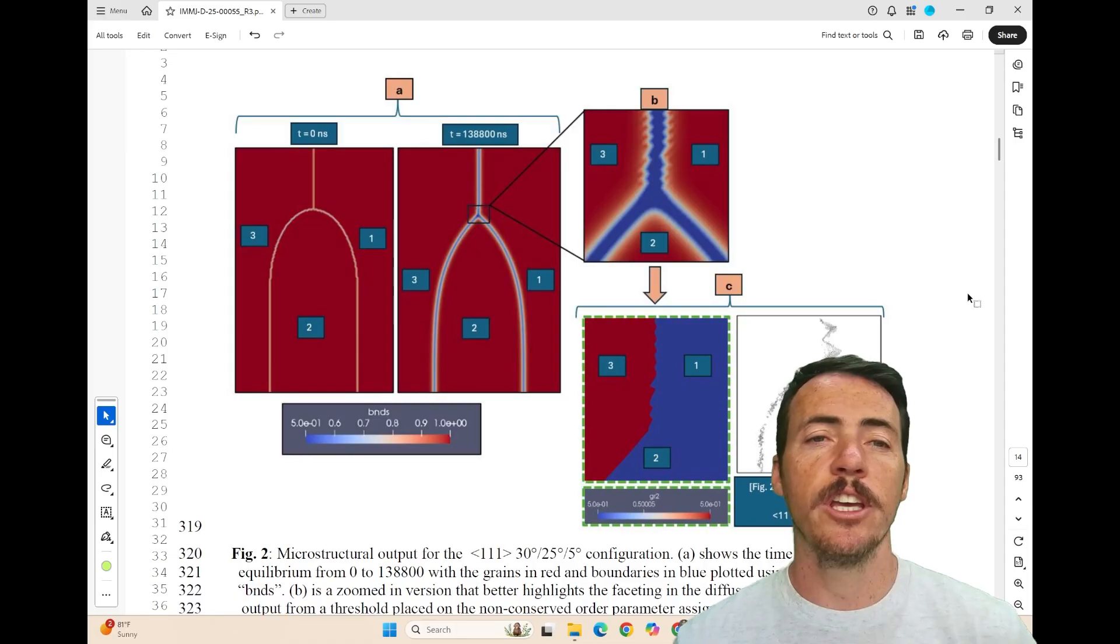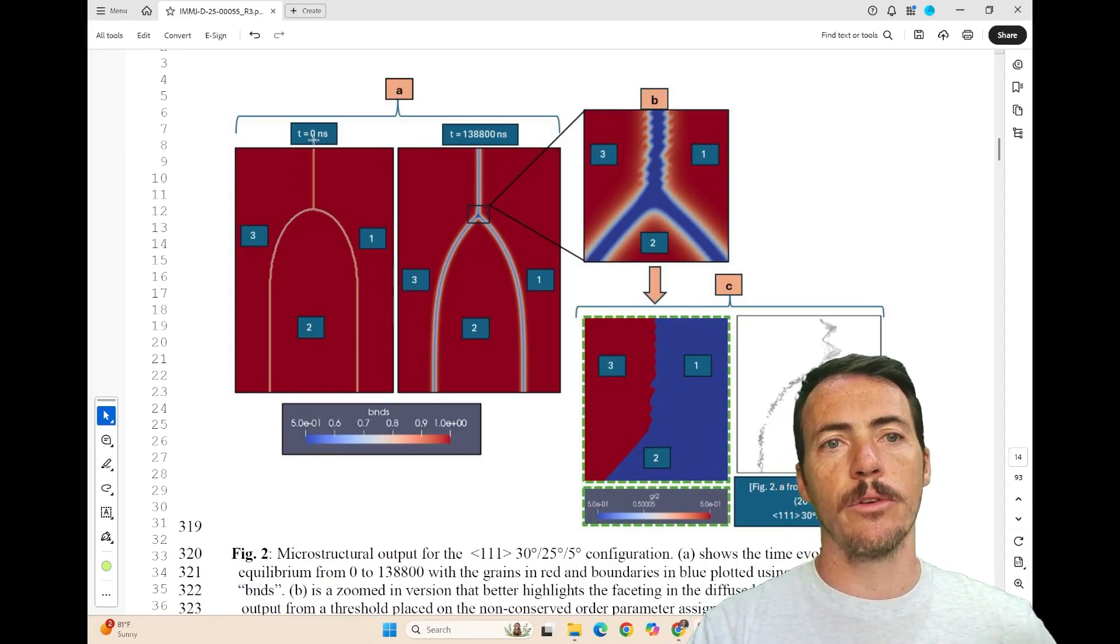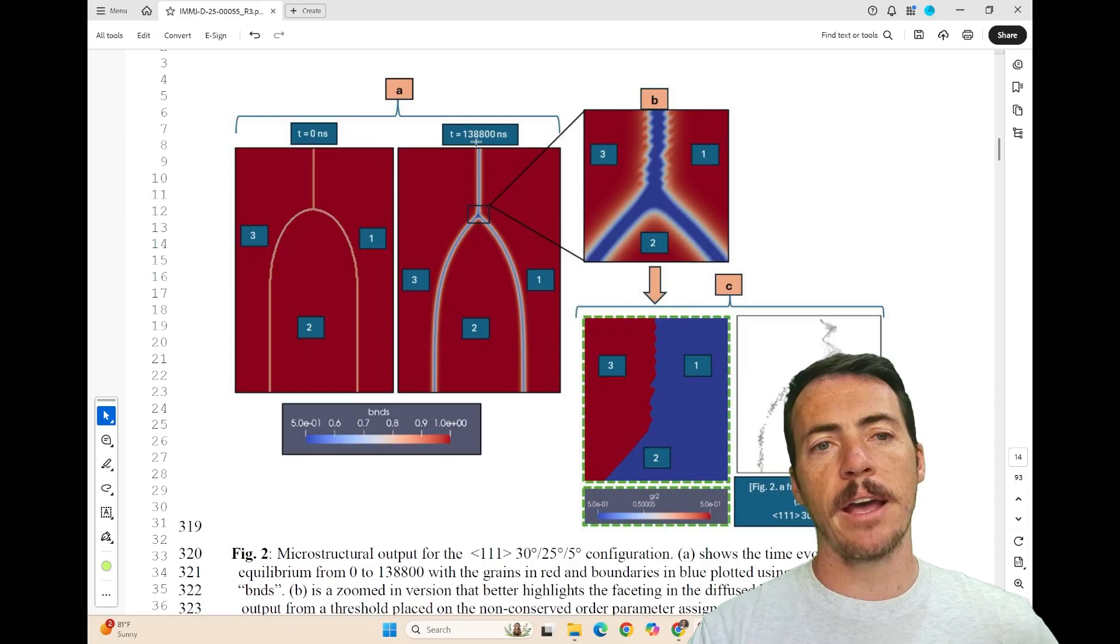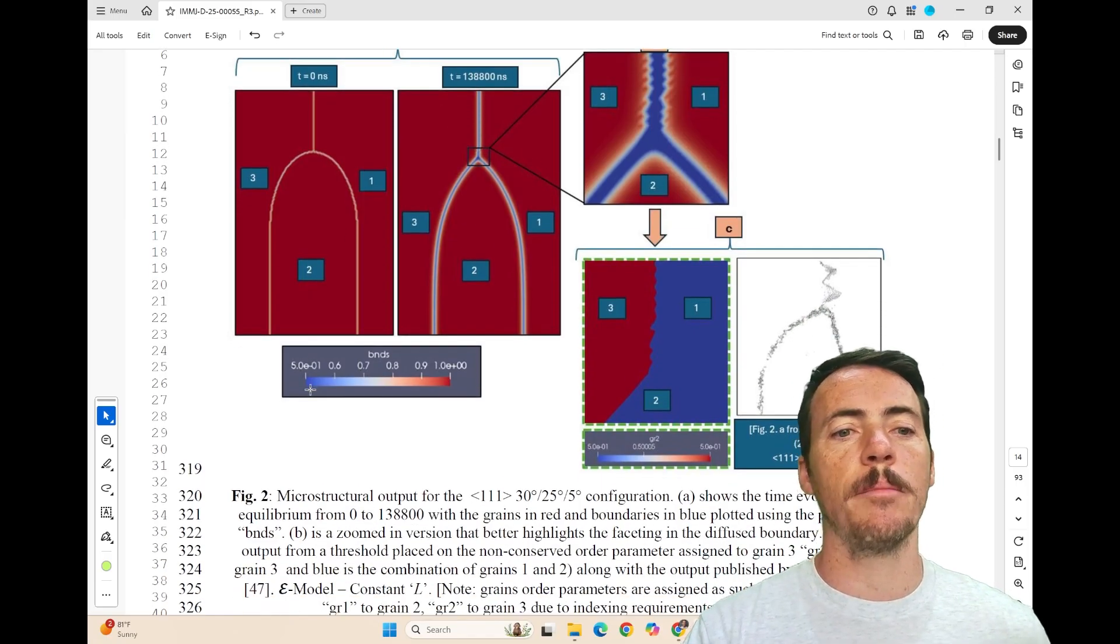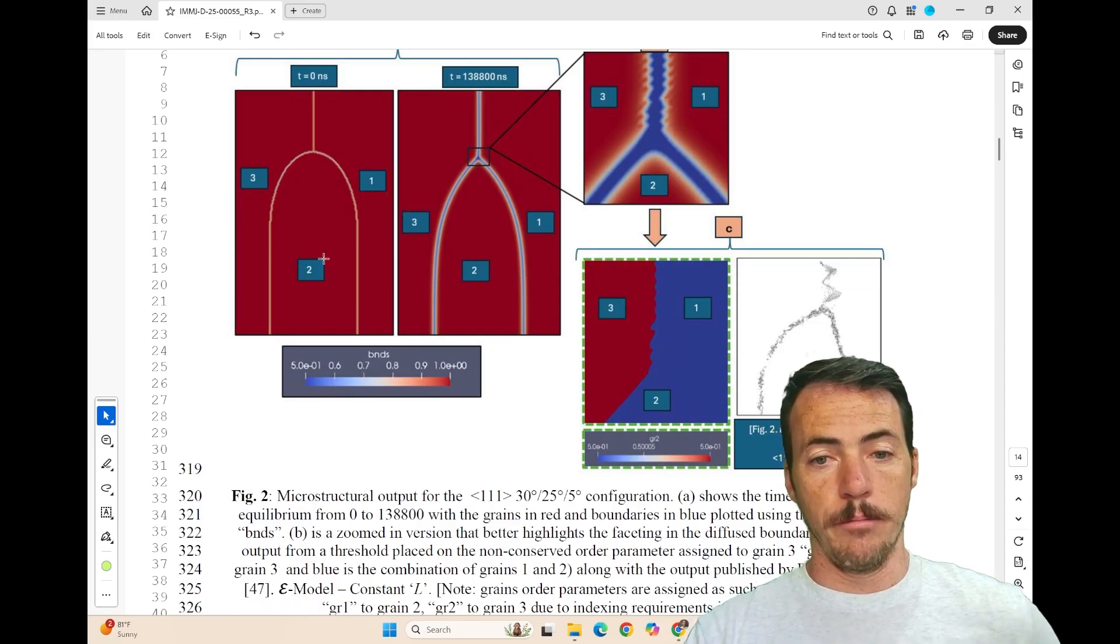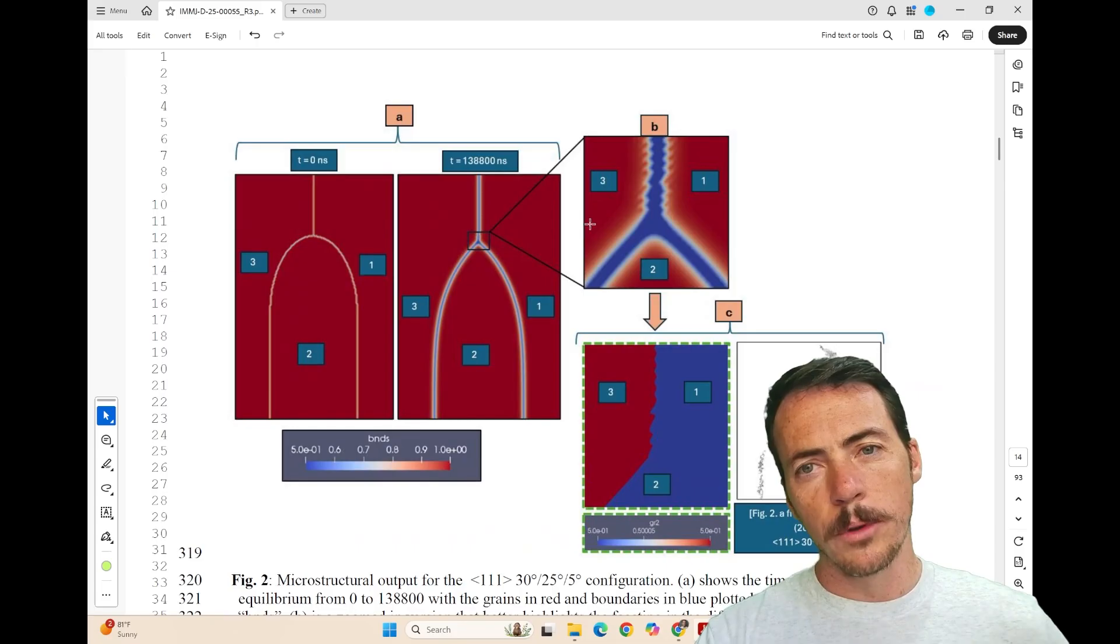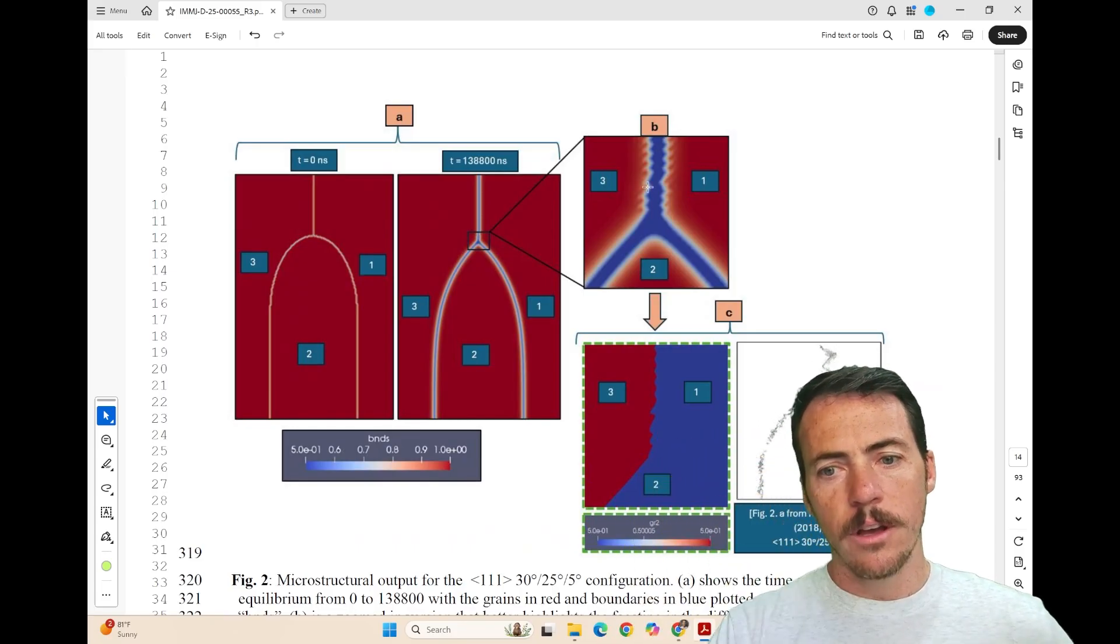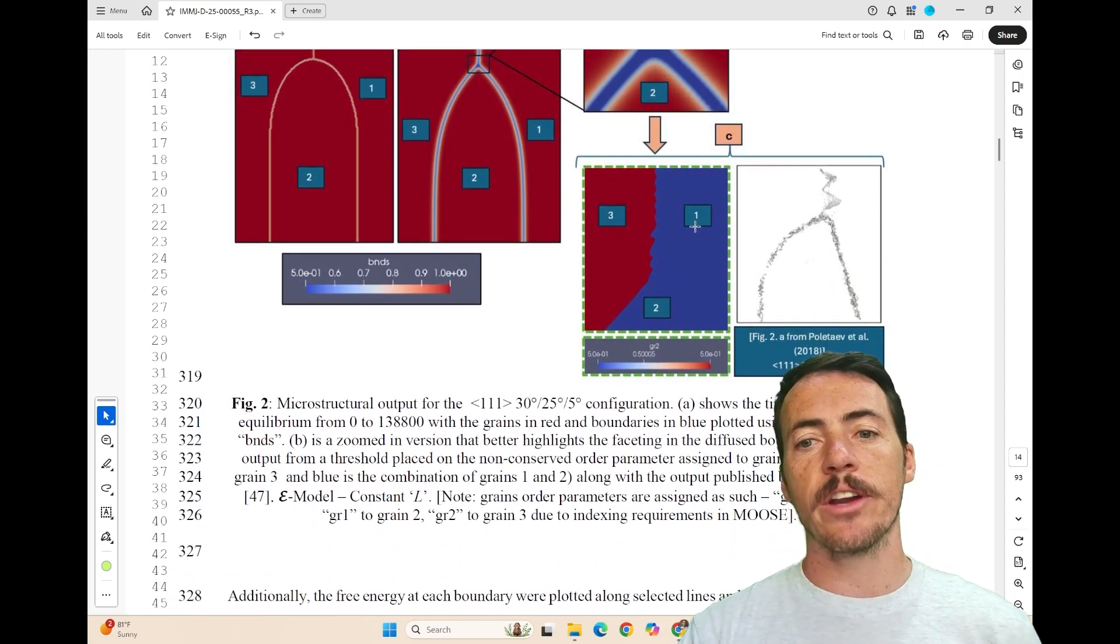So what did they actually achieve? If you take a look at this figure, you see an example. Here they're showing at time zero nanoseconds and here at some time past that. What the output is showing you on the left is the time evolution of the equilibrium. Grain boundaries are shown in blue. The grains are in red. When you zoom in on this triple junction, you can see that rough edge there. That's actually the faceting on the diffused boundary. And then in C, you're actually seeing the comparison with the other approach by Politev, and it's pretty good agreement.